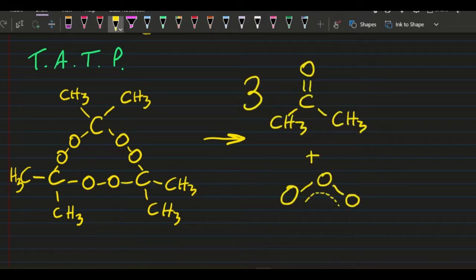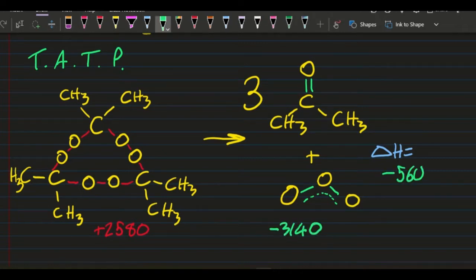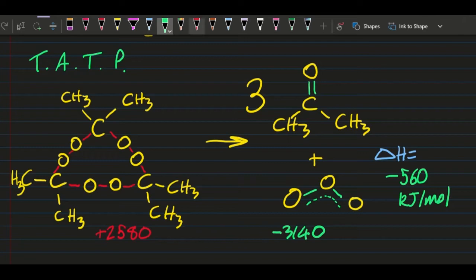How much energy does that produce? I couldn't find it on the internet, so I did a bond energy calculation, breaking the red bonds and then making the green bonds, which gives me a very small approximately minus 560 kilojoules per mole—a lot less energy than most explosives.